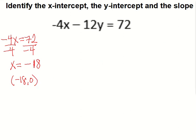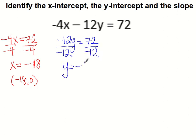So Y-intercept, we can actually just make X zero. Make this go away. We get negative 12Y equals 72. We divide by negative 12. And we get Y equals negative 6. And so our Y-intercept is not negative 6. It's zero, negative 6. Zero, negative 6.